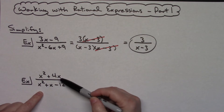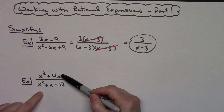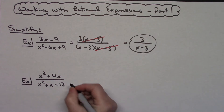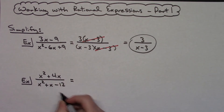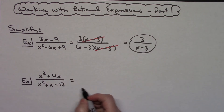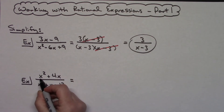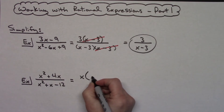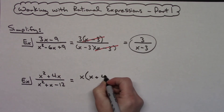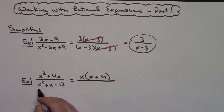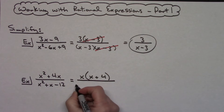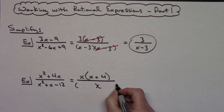Now taking a look at the second example — same type of scenario: a fraction with an algebraic expression in the numerator and one in the denominator. Since there are two terms in the numerator, I'm going to try to take out the GCF. Both terms have an x, so I take out an x, leaving me with x(x + 4).